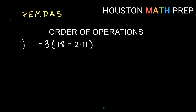Here is our first example. We have negative three outside of parentheses, and inside we have 18 minus two times 11. Looking at what we have: there's a multiplication where the negative three is next to the parentheses, a subtract between the 18 and the two, and a multiply between the two and the 11. This big grouping is inside parentheses, so I need to focus on everything inside the parentheses first.